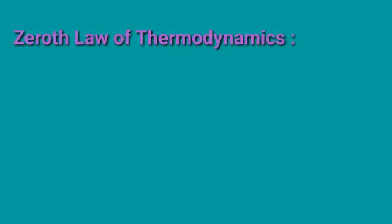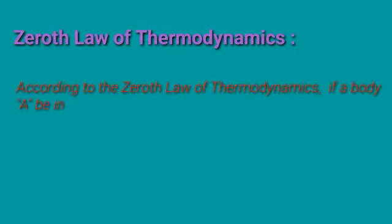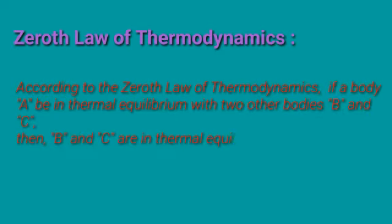Zeroth law of thermodynamics: if body A is in thermal equilibrium with two other bodies B and C, then B and C are also in thermal equilibrium with one another.